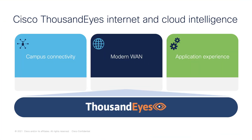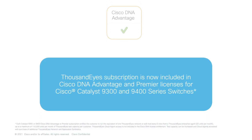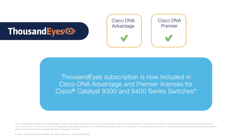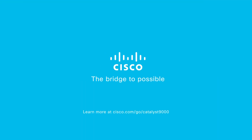This is just a sample of what ThousandEyes can do to help you deliver better campus connectivity, a modern WAN, and improve application experience for your users. Your Cisco DNA Advantage and Premier license now includes ThousandEyes Internet and Cloud Intelligence for your Catalyst 9300 and 9400 switches. Learn more at cisco.com/go/catalyst9000.